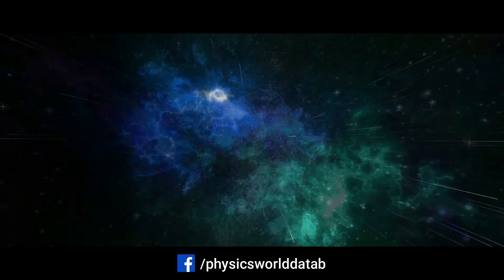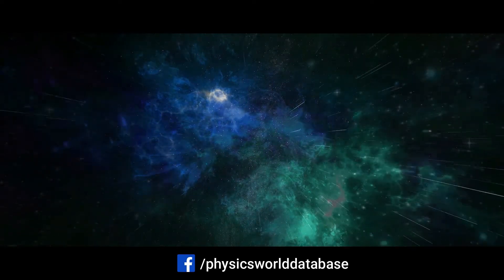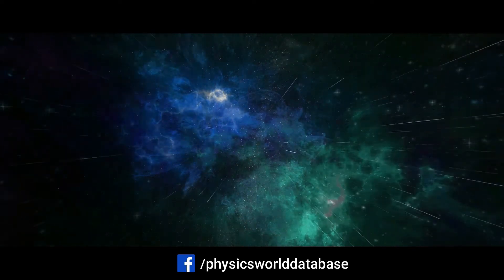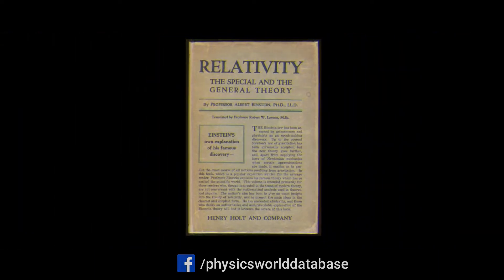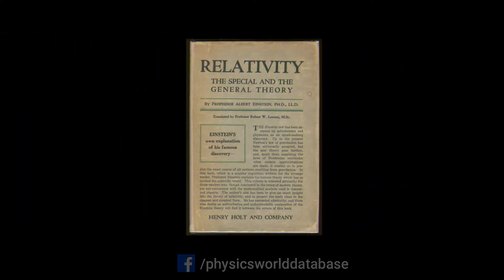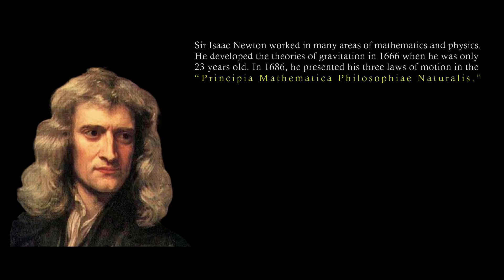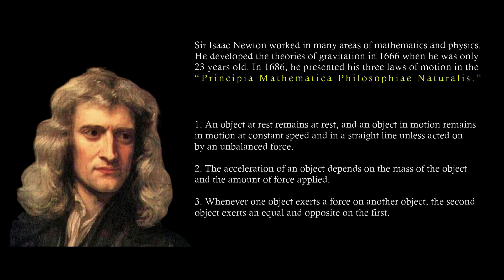But for objects traveling near light speed, Newtonian and Galilean relativity does not hold. At that point we have to apply Albert Einstein's theory of relativity. Before Einstein, physicists understood the universe in terms of three laws of motion presented by Isaac Newton in 1687, in his famous book Philosophiae Naturalis Principia Mathematica, Latin for mathematical principles of natural philosophy.